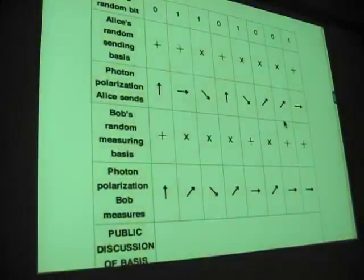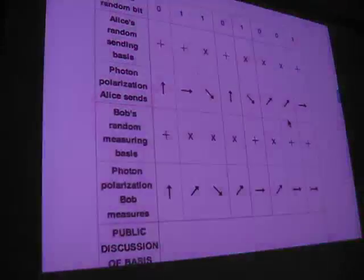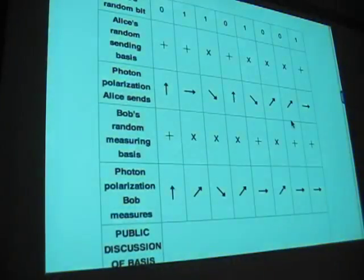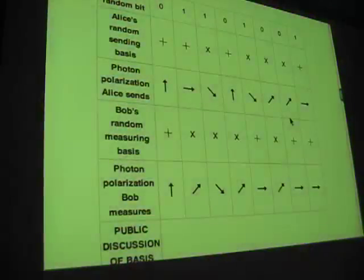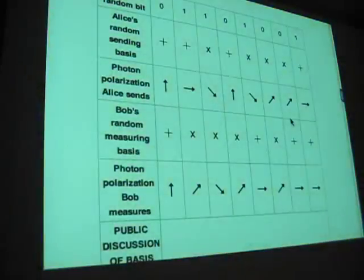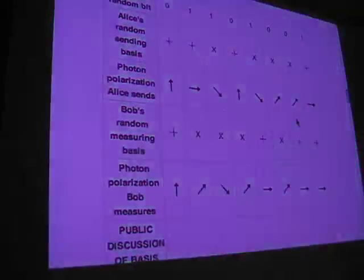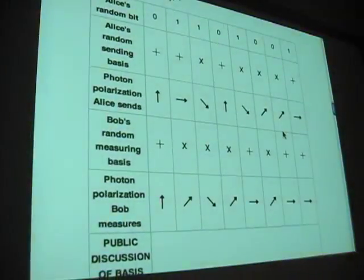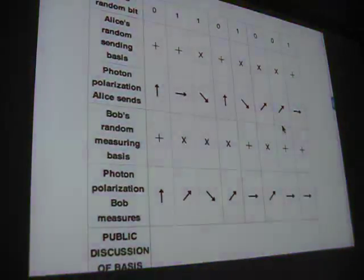This is her basis right here, how she's sending out the things. Bob receives these photons, and he just applies a random basis to read them. So he guesses. He says, well, I'm going to do a plus filter here, a diagonal filter here, and I'm just going to find out what I read.